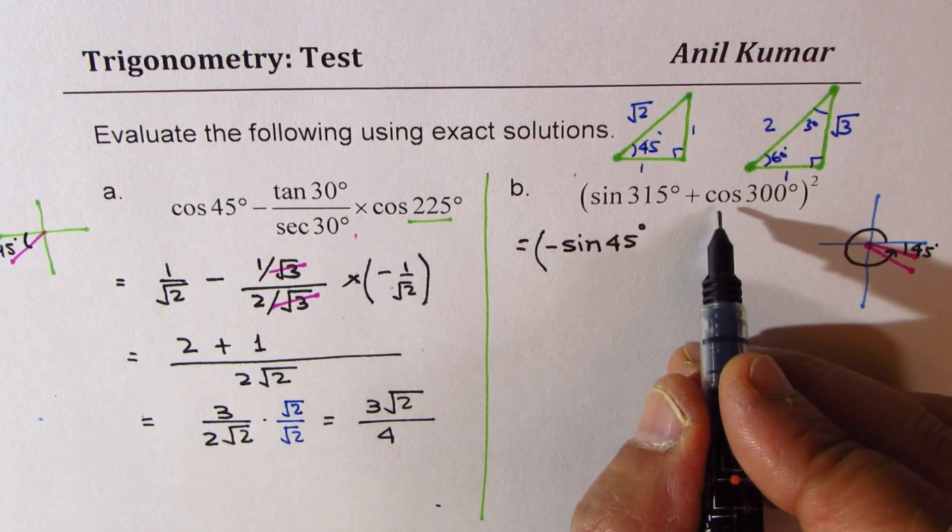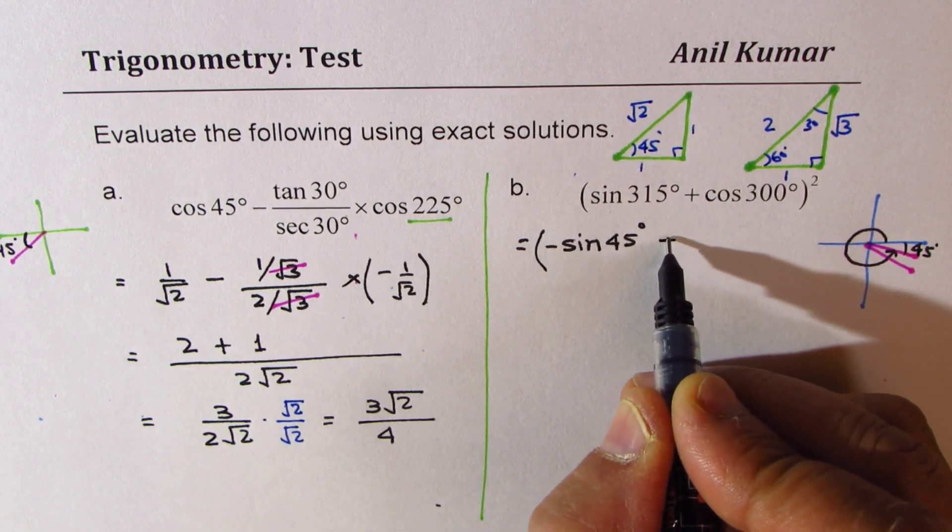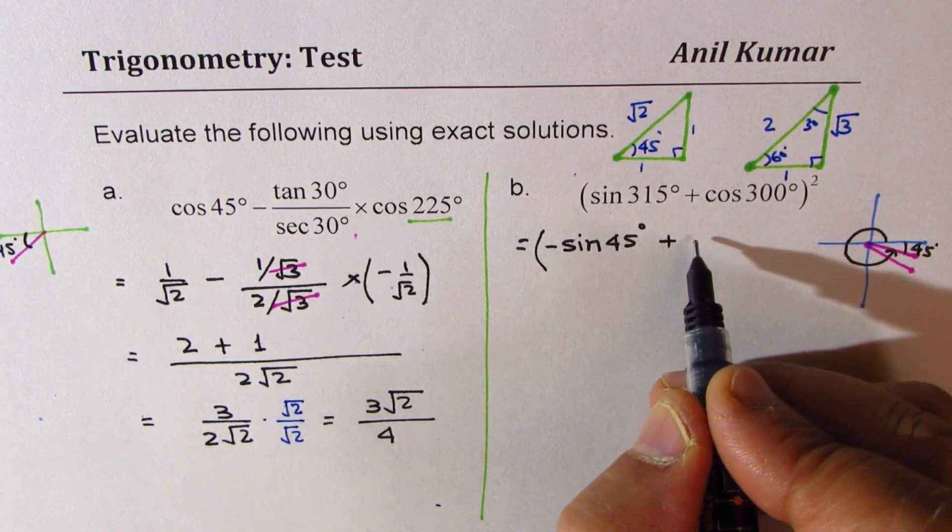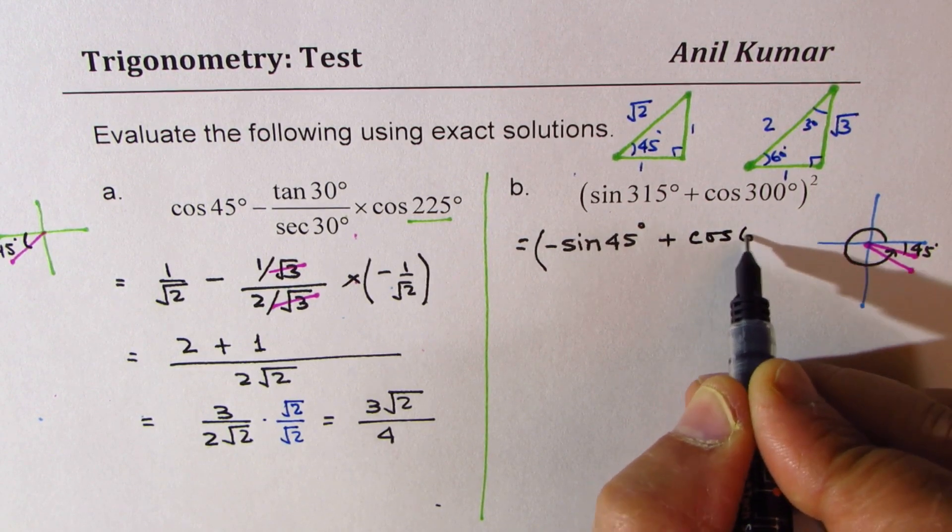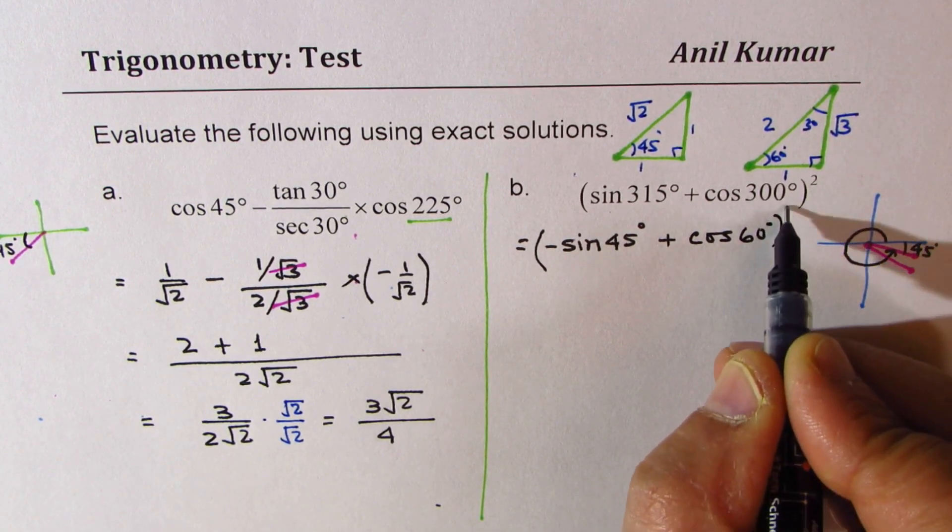For cos 300, the acute angle is 60 degrees. Cos is positive in quadrant 4, so we could write this as cos of 60 degrees whole square.